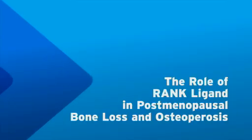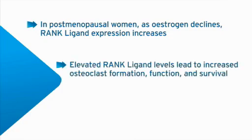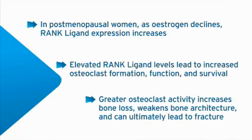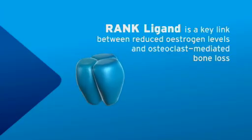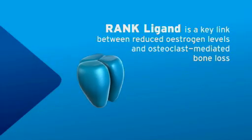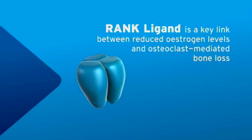In summary, in postmenopausal women, as estrogen declines, RANK ligand expression increases. Elevated RANK ligand levels lead to increased osteoclast formation, function, and survival. Greater osteoclast activity increases bone loss, weakens bone architecture, and can ultimately lead to fracture. We now understand the underlying biological mechanism of the increase in bone resorption that follows menopause. RANK ligand is a key link between reduced estrogen levels and osteoclast-mediated bone loss.